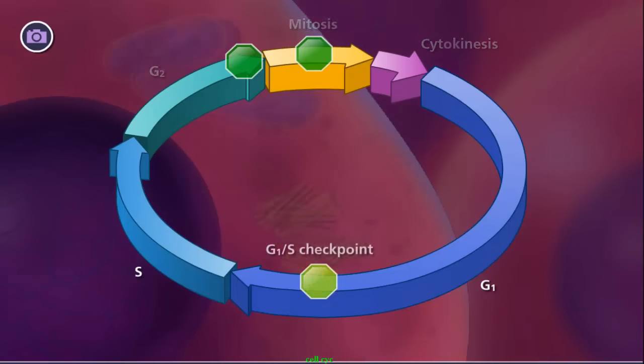The first checkpoint is the G1S checkpoint and is considered the primary point at which the cell cycle continues or stops. External signals and growth factors can influence the cell cycle, and affect the progress at or before this critical checkpoint.